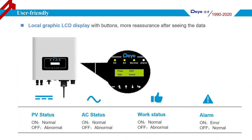The RS485 string inverters have an LCD screen, indicators, and buttons. From the LCD and indicators, users can access lots of information about the plant, such as PV generation, PV voltage, current, and so on. This brings great convenience to operation and maintenance engineers, especially in certain circumstances.